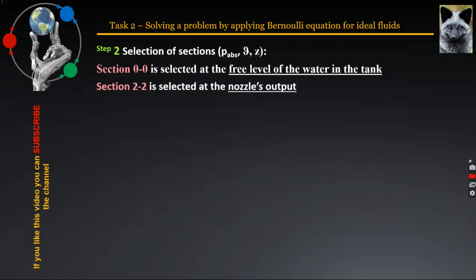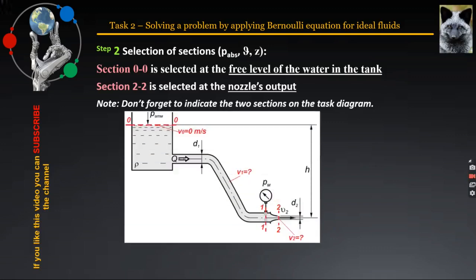Be sure to indicate the locations of these sections on the diagram, as presented in the sample scheme on the slide. At a later stage, section 11 will also be selected, because it has to be used in determining the required manometric pressure.